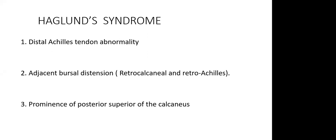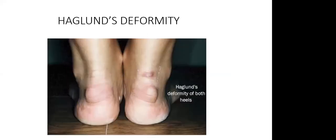The second clinical sign is that adjacent to the bursa there will be some distension — the bursa itself will distend depending on adaptation. This may involve the retrocalcaneal and retroachilles bursae. The third point is the prominence of the posterior superior calcaneus, visible on X-ray and even visually. Of my patients, one had unilateral and one had bilateral protuberance — on one leg there was pain, on the other there was none, yet both X-rays showed the protuberance.